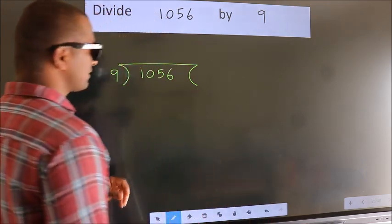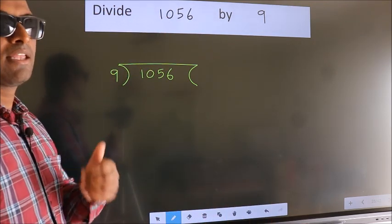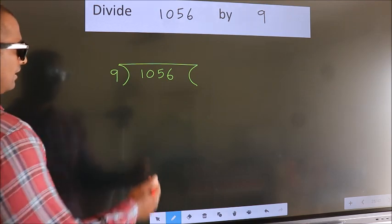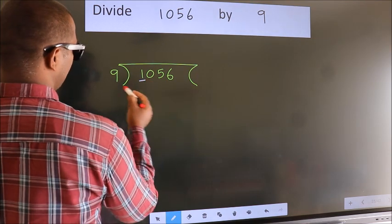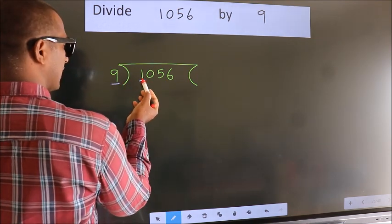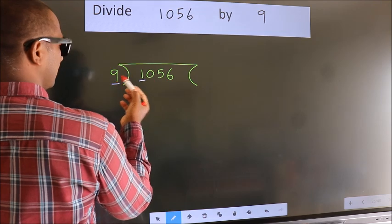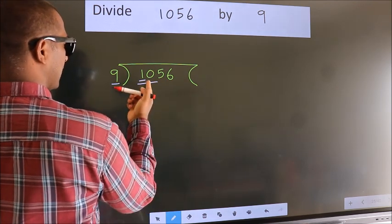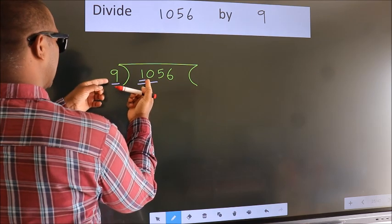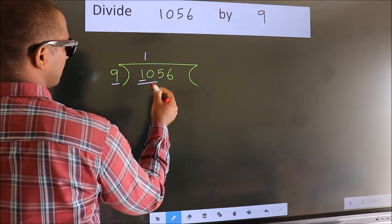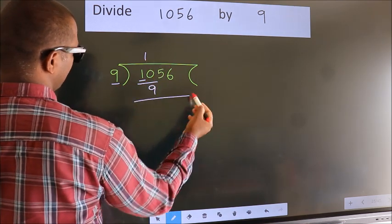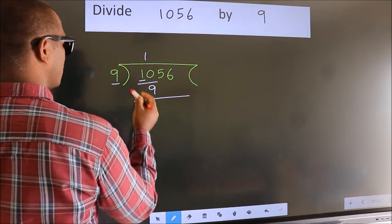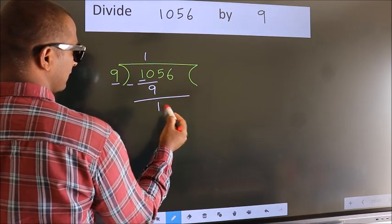This is your step 1. Next, here we have 1, here 9. 1 is smaller than 9, so we should take two numbers: 10. A number close to 10 in the 9 table is 9 ones, which is 9. Now we should subtract. We get 1.